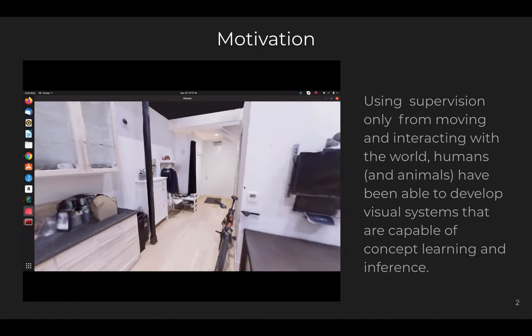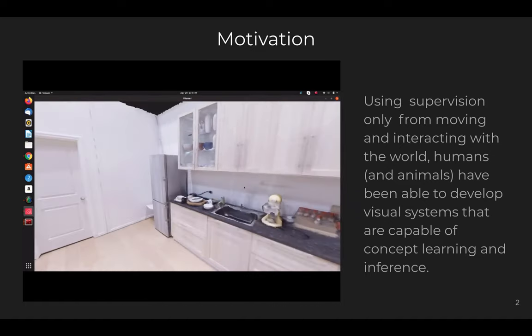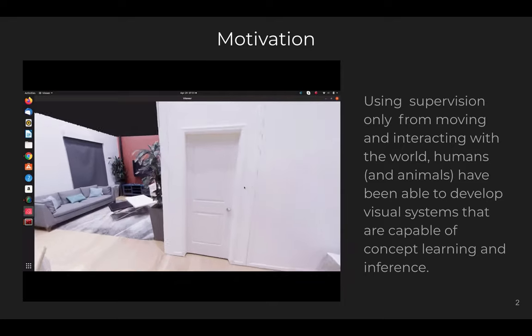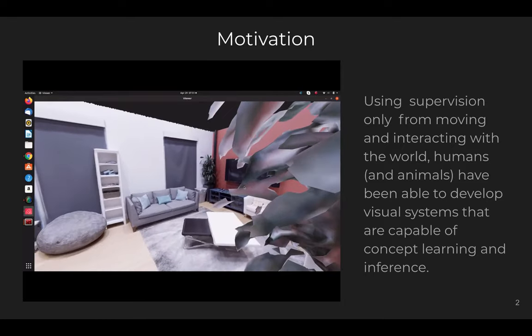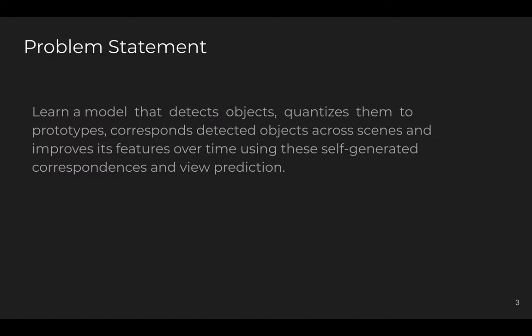Humans and animals can identify objects, detect their poses, and correspond multiple instances of the same object. Our problem statement is to learn a model that can achieve something similar by detecting objects, quantizing them into 3D prototypes, detecting the pose of objects, and corresponding detected objects across scenes, improving their features using self-generated correspondences, view predictions, and other self-supervision losses.